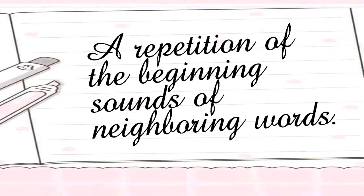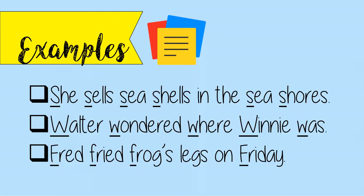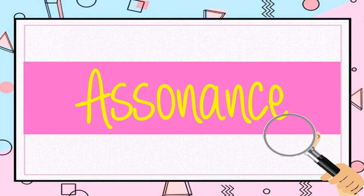The first one is alliteration. It is a repetition of the beginning sounds of neighboring words. Example: she sells seashells in the seashores. In this sentence, the letter S is the most repeated sound.